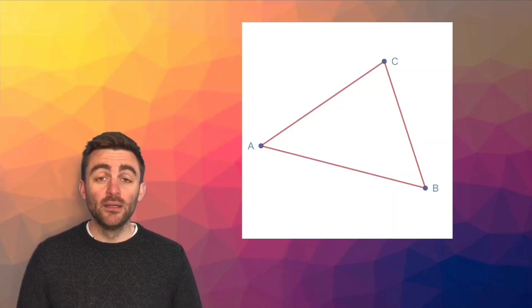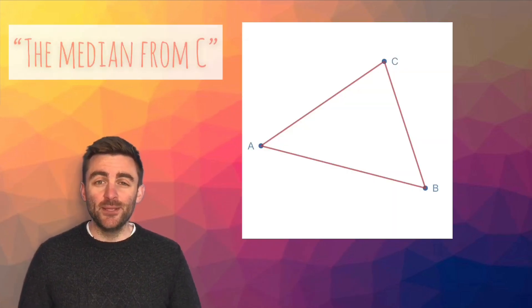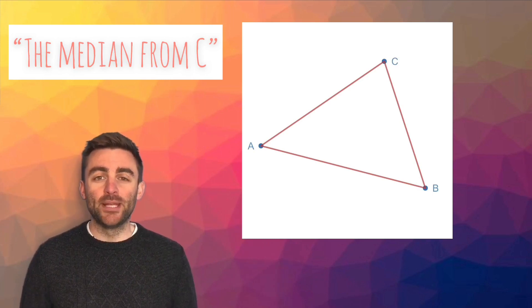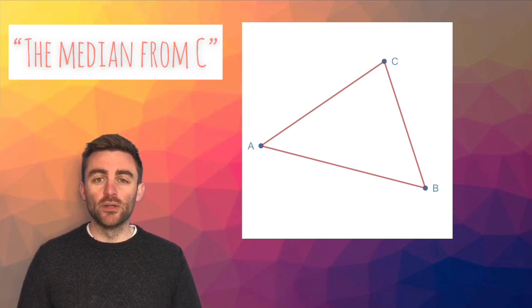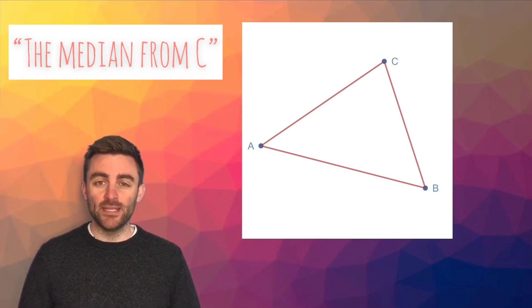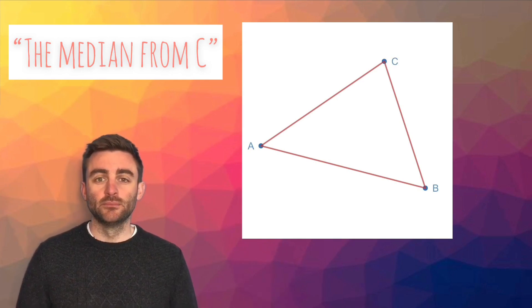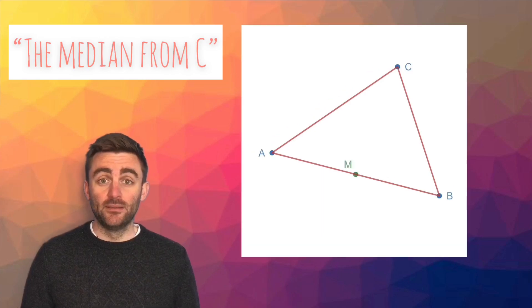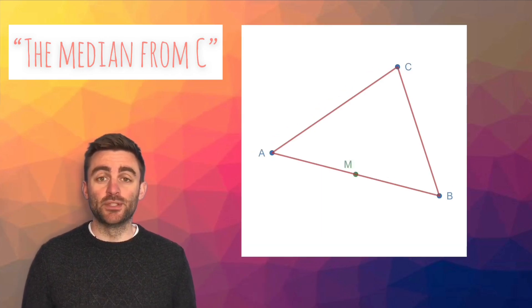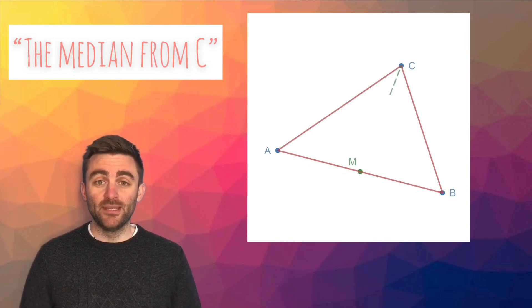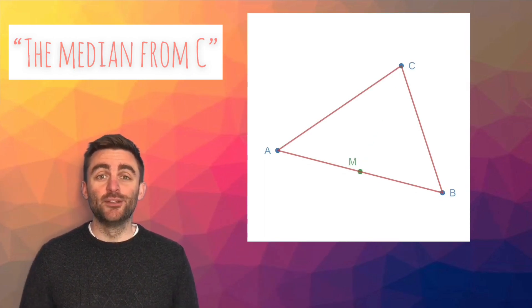If we consider a different median in the triangle, let's say the median from C, then think about what midpoint we would want to use. What is the opposite side from C? Well, the opposite side from C is AB, so we would want to use the midpoint of AB. Therefore, the median from C would travel from C to the midpoint of AB.